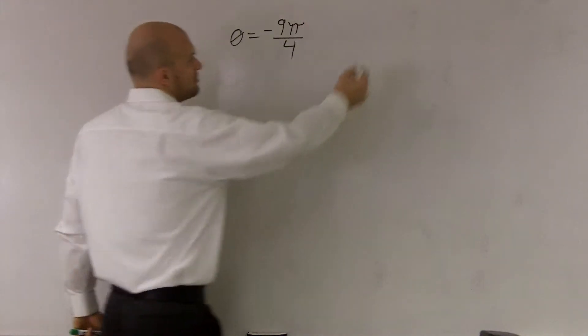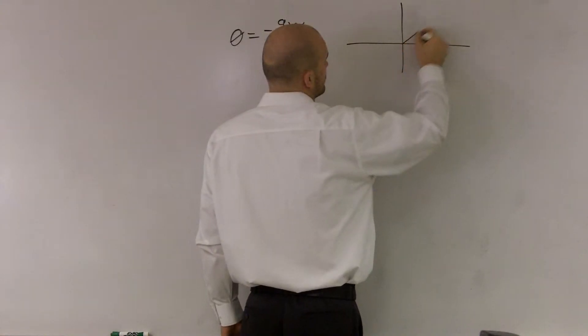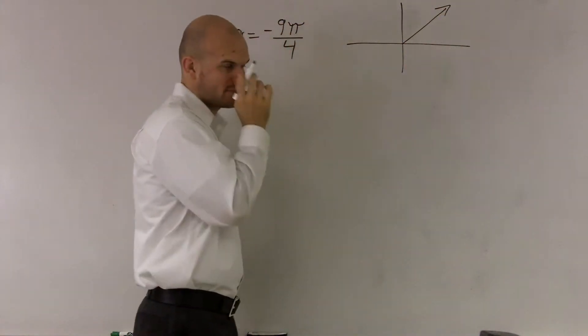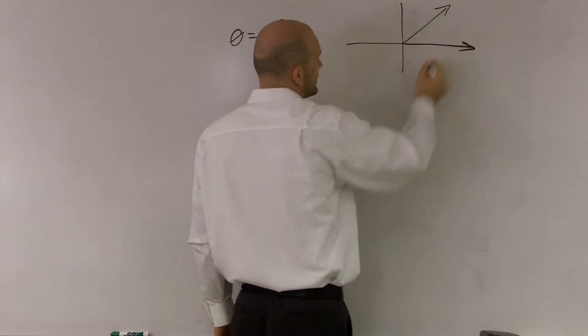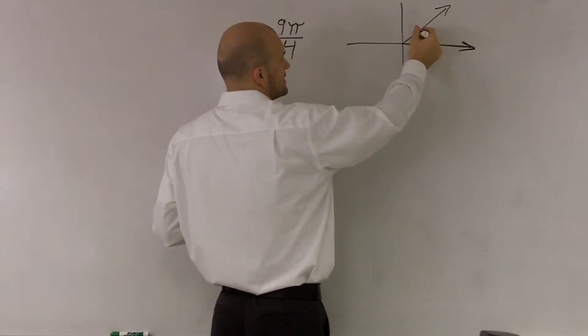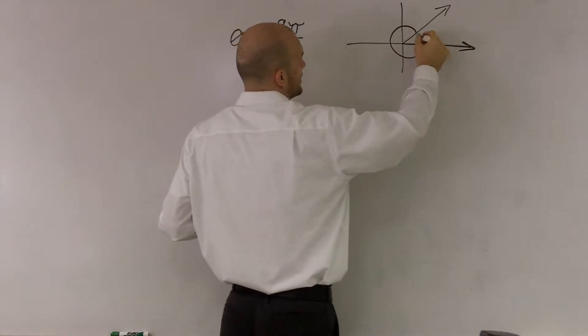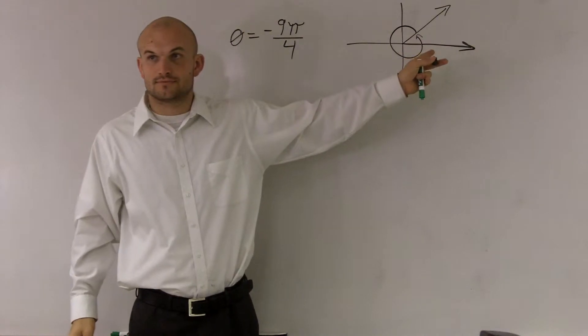So let's just look at a picture of an angle. Let's say here's my angle. One thing I want you guys to understand is if I go in the positive direction, let's say I start here and I go to here. Did I go back to where I started?